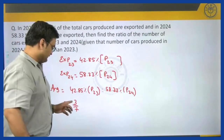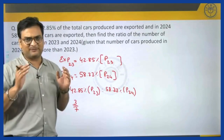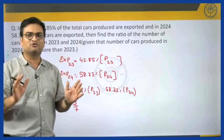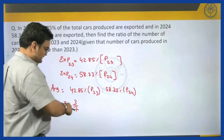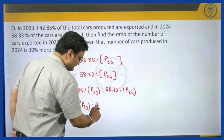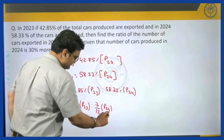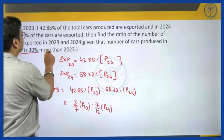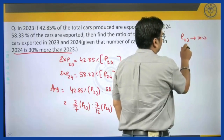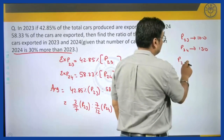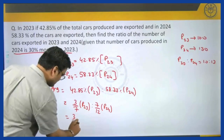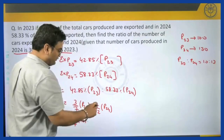But the moment I observe that 42.85 percent in fractional terms is nothing but 3/7 — now the question in your minds could be how does one know this? One would know it only after practice. You have to spend some time with the fractions — that list from 1/1 to 1/25 you will have to go through, be thorough with it, and memorize it. So exports in 2023 equals 3/7 of P23, and 58.33 percent is nothing but 7/12 of P24. We also know that cars in 2024 are 30 percent more than in 2023 — so if production in 2023 is 10, production in 2024 is 13.